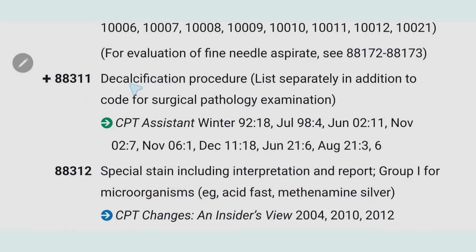We code all these based on the severity of the specimen, and 88309 is for the highest complexity. Remember there is an add-on code 88311 for the decalcification procedure. You have to list it separately in addition to the code for surgical pathology examination. If decalcification is mentioned, you will use the add-on code 88311.